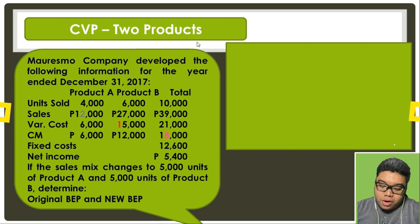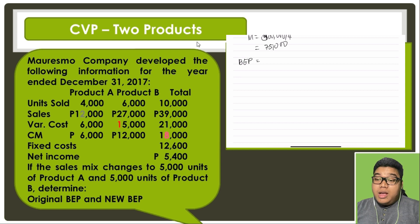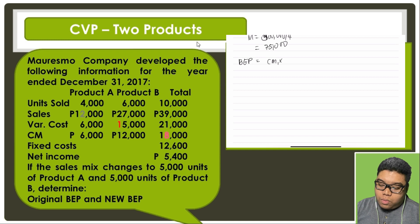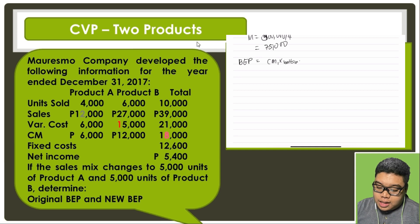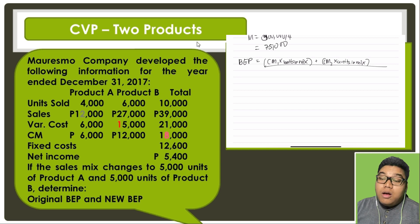So how do we compute for the break-even point of this company? We take the CM of product one multiplied by the units in mix, then add the CM of product two multiplied by its units in mix, and divide that all over the total items in mix.